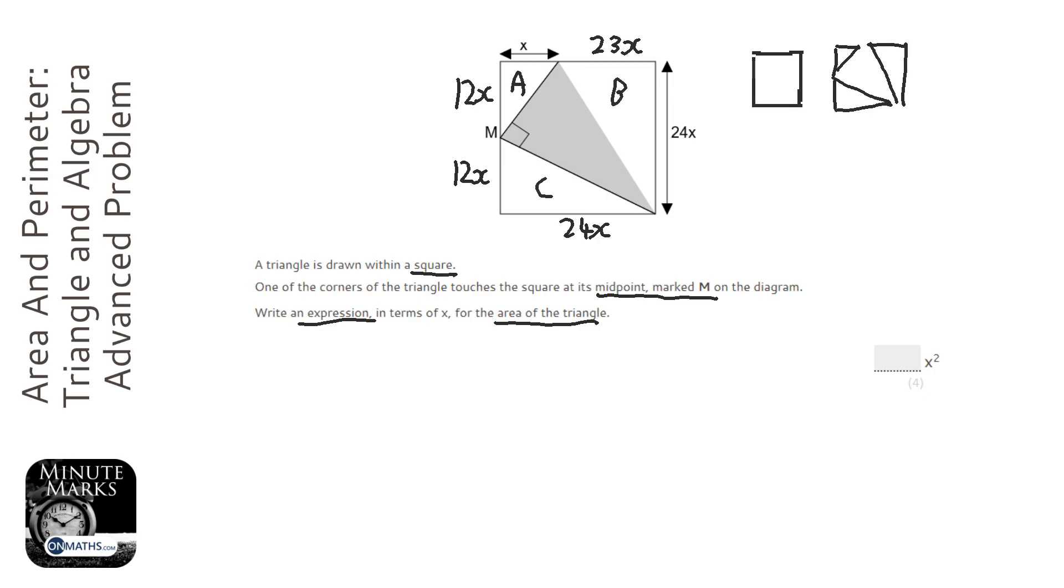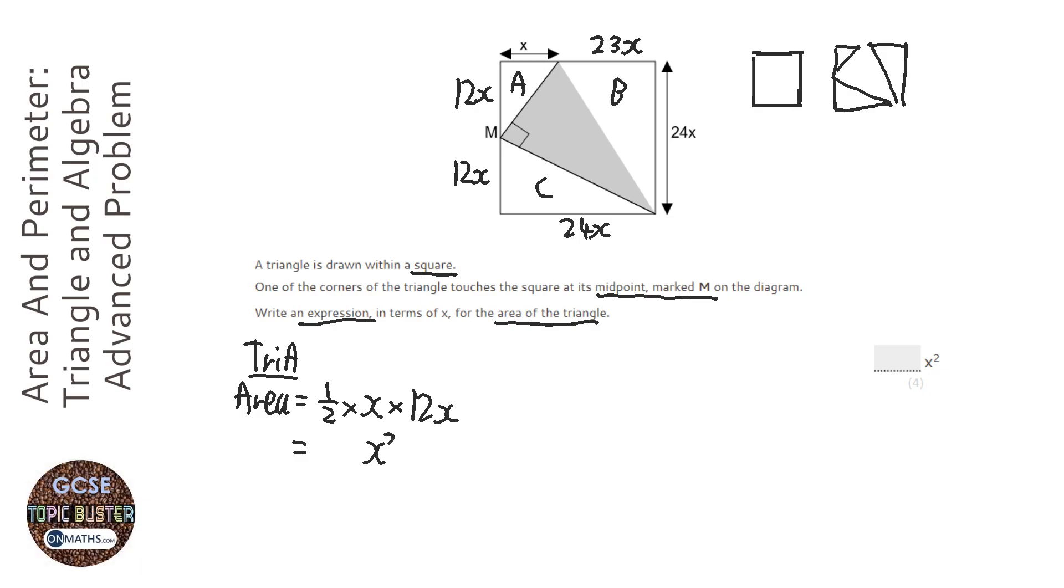I'm going to work out each of the triangles, so triangle A I'm going to start off with. So the area for triangle A is half times the base, which is x, times the height, which is 12x. Now, x times x is x squared, and half of 12 is 6, so that's going to be 6x squared.